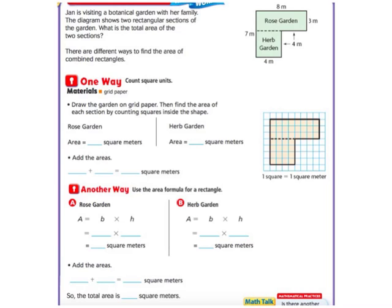And then you just find the area, base times height. And then you're going to add those together. So I'm going to show you, that might sound like a lot, but I'm going to show you here. Jan is visiting a botanical garden with her family. The diagram shows two rectangular sections of the garden. So the rose garden is one rectangle section of it. And the herb garden is the second rectangular section of it. What is the total area of the two sections? There are different ways to find the area of combined rectangles. So they're saying that the first way is just to draw it out on grid paper.